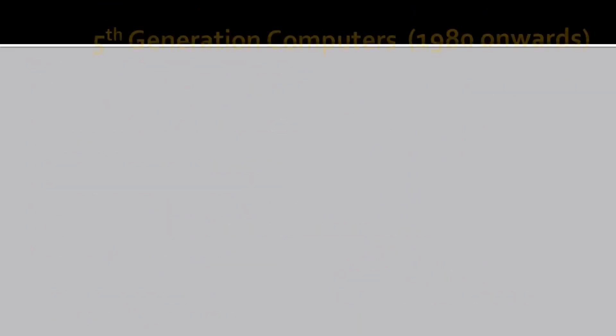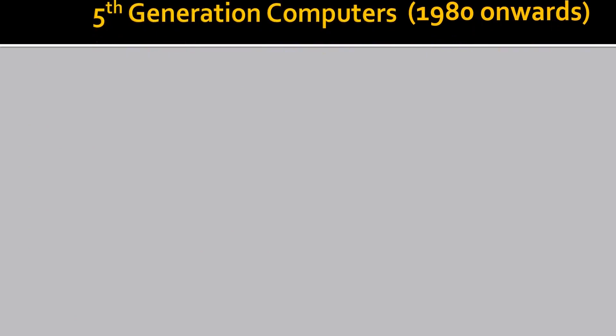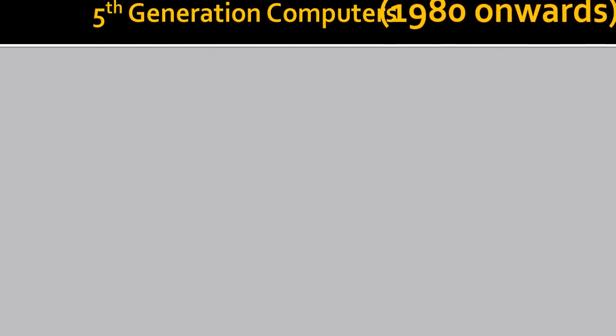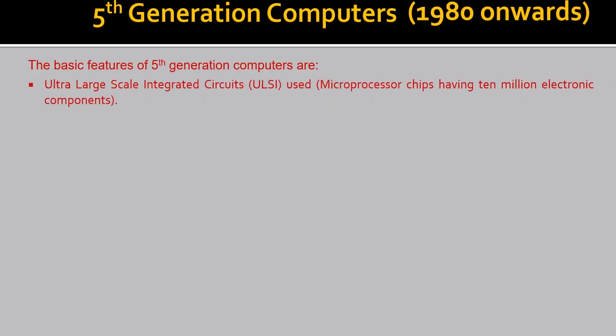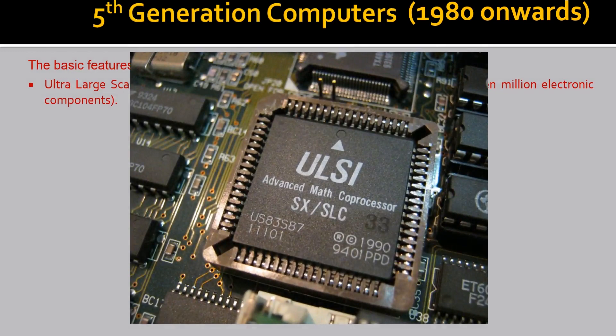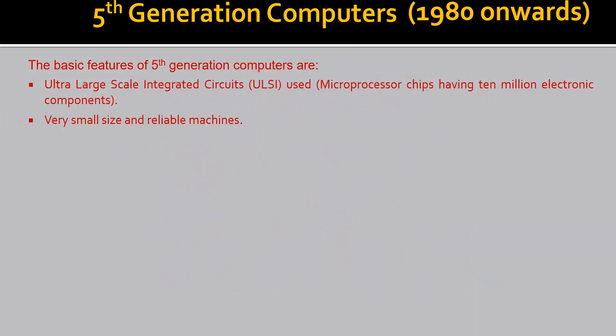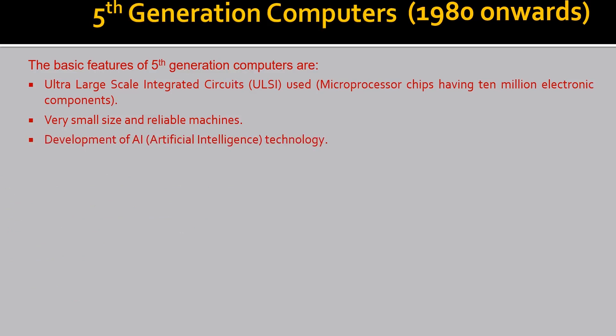Let's discuss 5th generation computers. These were from 1980 and are ongoing even now. They used Ultra Large Scale Integrated circuits — ULSI — in which a microchip has 10 million electronic components. In this generation, there was also development of Artificial Intelligence — AI — and Natural Language Processing — NLP.